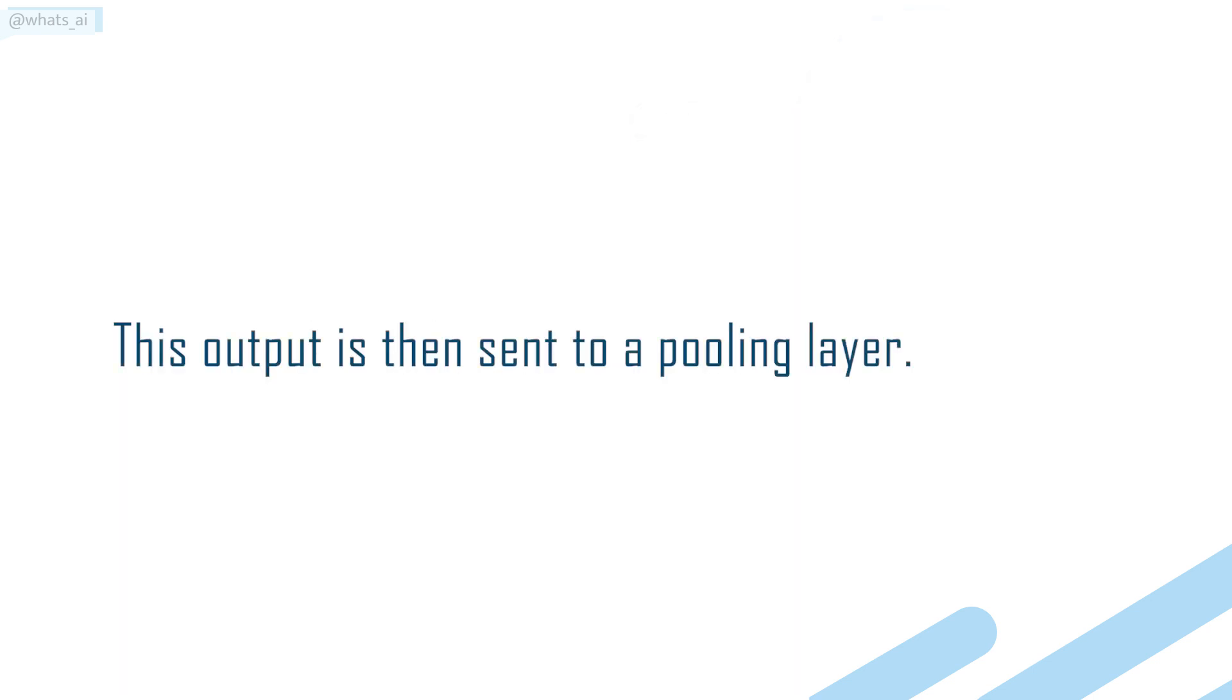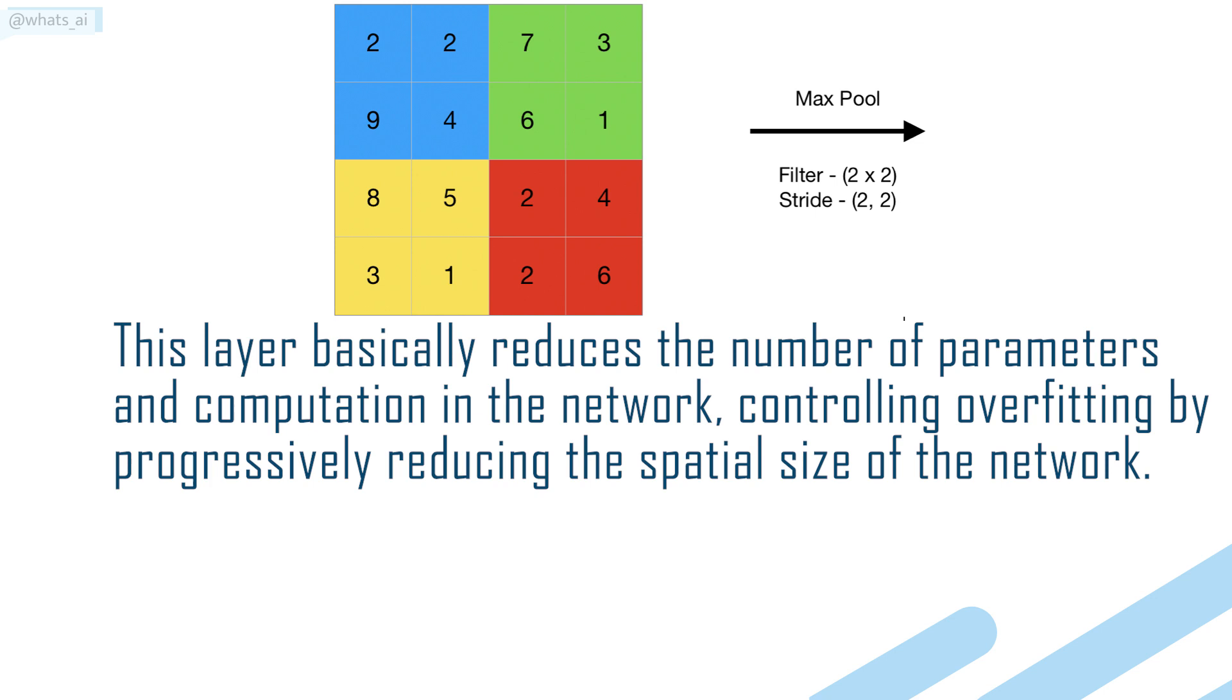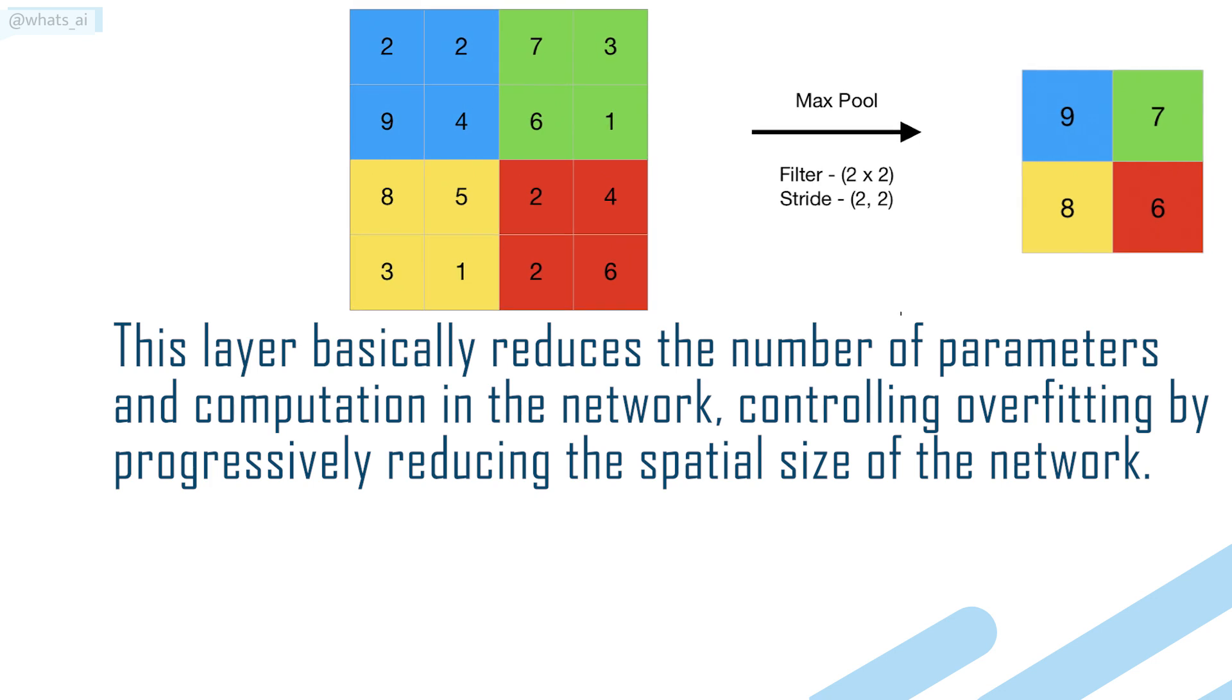This output is then sent to a pooling layer. This pooling layer can be seen between convolution layers in a CNN architecture. This layer basically reduces the number of parameters and computation in the network, controlling overfitting by progressively reducing the spatial size of the network.